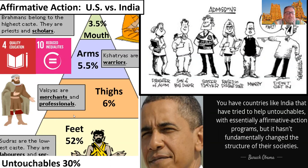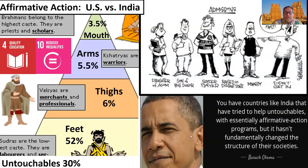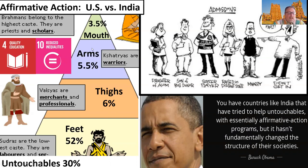We often complain about affirmative action in the United States. Here's a quote from President Barack Obama: 'You have countries like India that have tried to help untouchables with essentially affirmative action programs, but it fundamentally has not changed the structure of their societies.' This has been around for thousands of years. While there have been some dramatic changes in the number of untouchables and individuals from the lower classes moving up, they generally are not reaching the higher levels yet. India is trying to repair a system that's been around for the better part of 3,000 years.